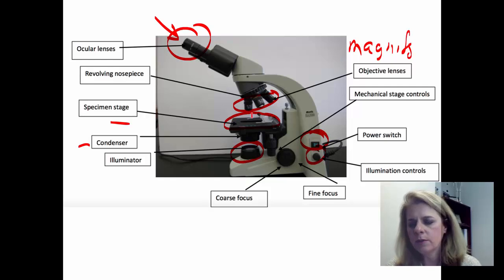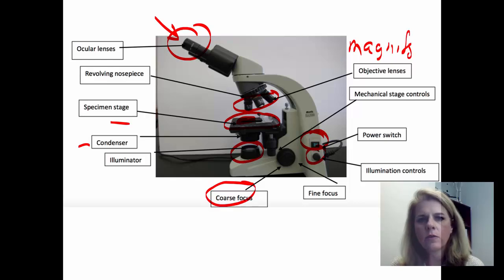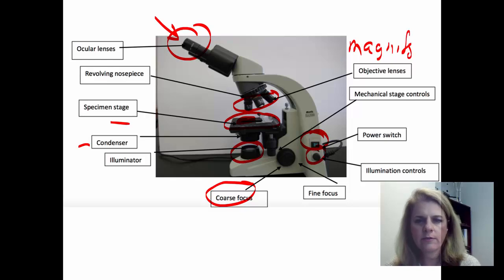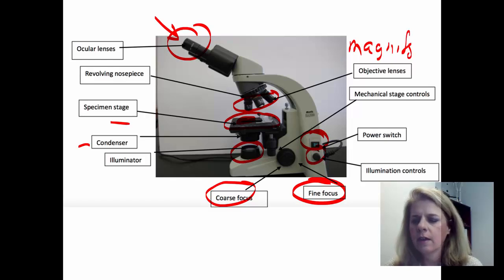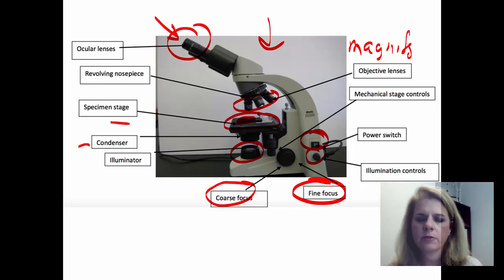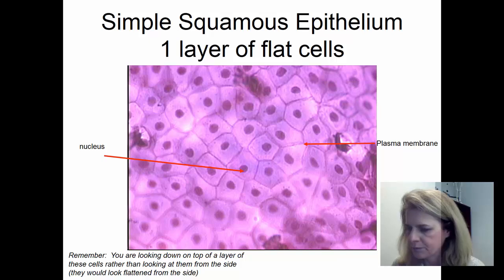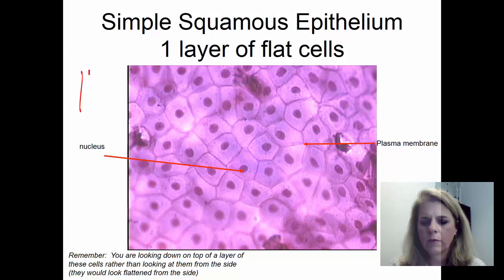You've got to be able to turn it on — that's the power switch — and then you have your light, which is the illuminator. Once you put your specimen on the stage, you use your coarse focus to bring the stage up to the objective lens and get it into focus, then you use your fine focus for fine adjustment. Be able to identify the parts because I will have a picture of this on your exam.